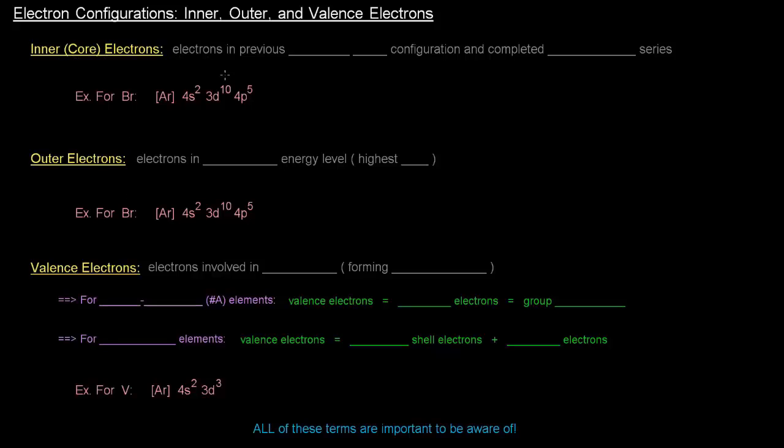The inner or core electrons are electrons in previous noble gas configurations and completed transition series. So let's think about the example bromine. Bromine's condensed configuration is written like this: everything up through argon, and then 4s2, 3d10, and then 4p5.